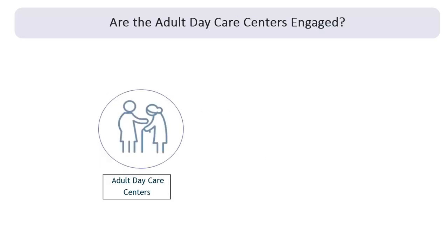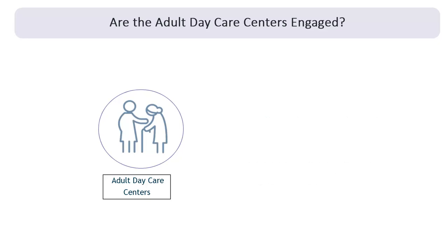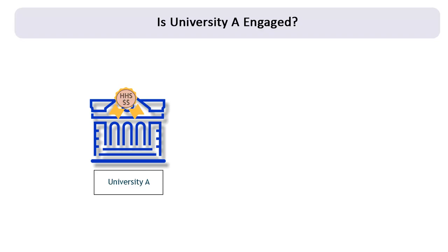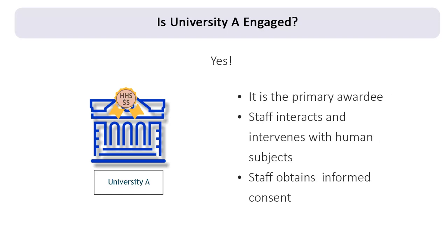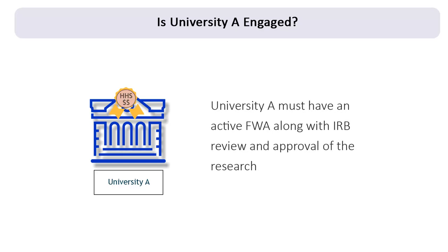Are the adult daycare centers engaged? No. Even though the adult daycare centers are putting up posters, distributing pamphlets, and providing information about the study, that is the extent of their involvement. Staff members at the adult daycare centers are not obtaining informed consent or conducting any other human subjects activities for the research. The adult daycare centers are not engaged and are not required to have an FWA. Is University A engaged? Yes! University A is engaged because it is the primary awardee of the federal grant and its staff will interact and intervene with human subjects for the purpose of the non-exempt human subjects research by obtaining their informed consent and performing the study procedures. University A must have an active FWA along with IRB review and approval of the research.